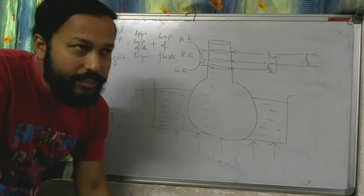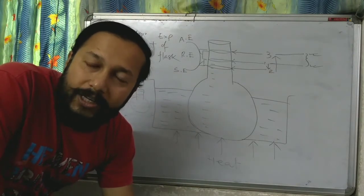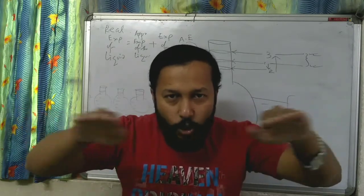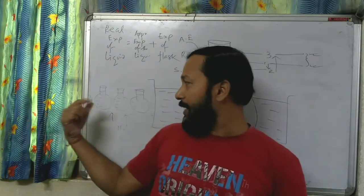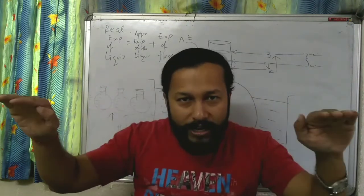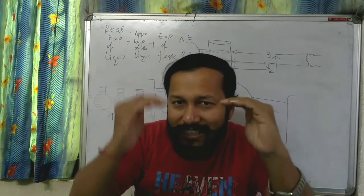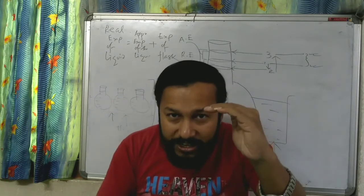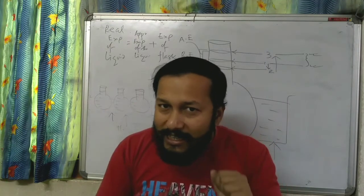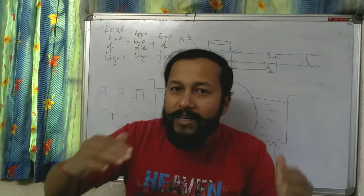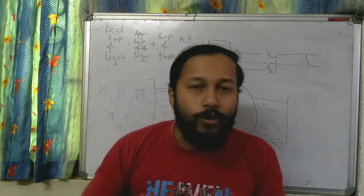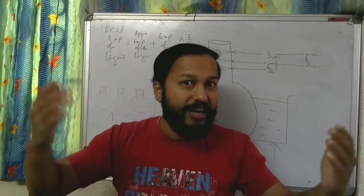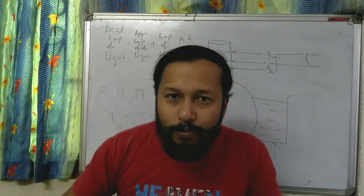Now start giving heat — say for 20 to 30 minutes. After 30 minutes you will notice that in the beginning the liquid level in all the flasks was the same, but after giving heat the levels are disturbed. In some flasks the level is a little higher, and in others a little lower. This indicates that all the liquids expanded but at different rates.